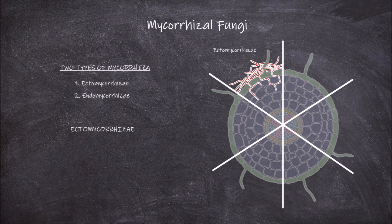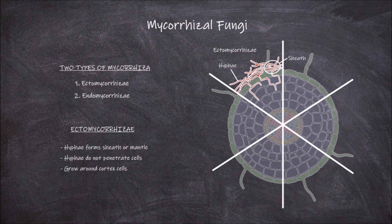Ectomycorrhizae are associations where the hyphae of the fungus forms a sheath or mantle over the root of the plant. The hyphae that enter the root do not penetrate the cells of the root. Instead they grow a network around the cells in the cortex, forming what is known as a Hartig net.